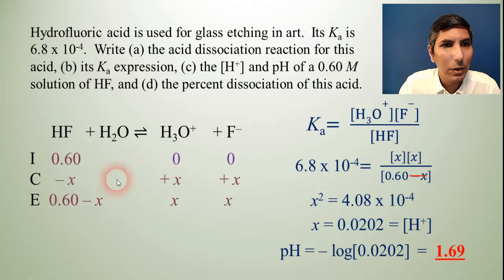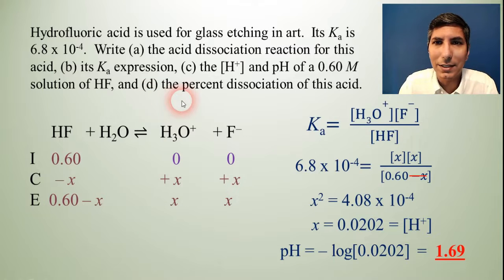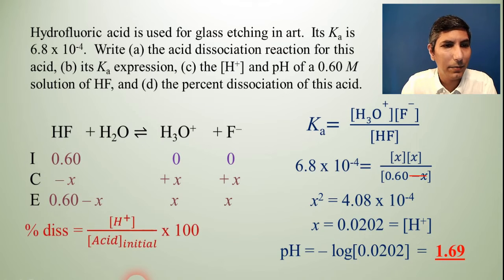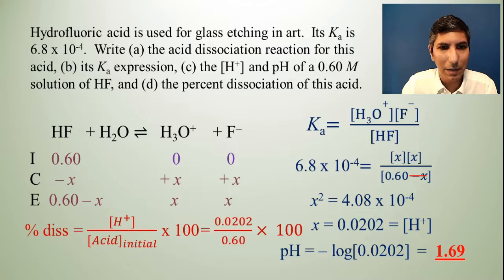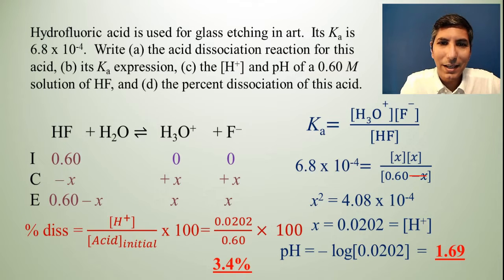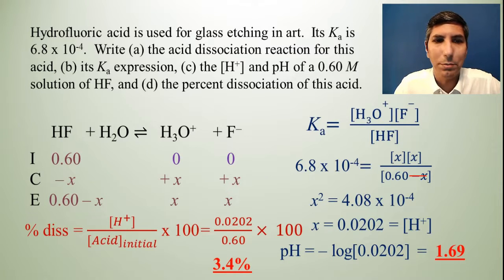So now we can do part D, which is percent dissociation. Percent dissociation is just the value of the change divided by the initial concentration times 100. So when I divide those out and times by 100, that's 0.0202 divided by 0.6 times 100. I find that the percent dissociation was 3.4%. So yes, this is a little higher than some of the others that we've done, but still it was okay to do that 5% rule. So that is a good example of a very typical weak acid problem.